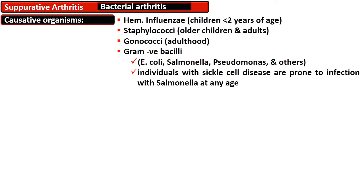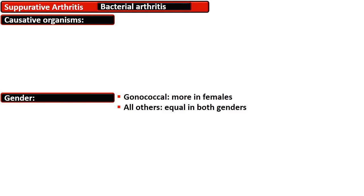The causative organisms for bacterial arthritis differ according to each age group. In children below the age of 2 years, Haemophilus influenzae is the most common responsible microorganism. Staphylococci are responsible in older children and adults. Gonococci are responsible for septic arthritis in adulthood. Gram-negative bacilli such as E. coli, Salmonella, and Pseudomonas are also responsible. Individuals with sickle cell disease are prone to Salmonella infection at any age.